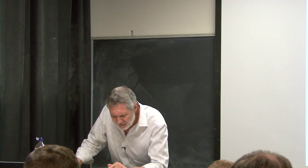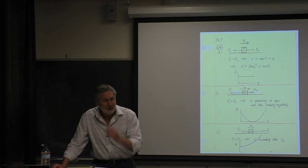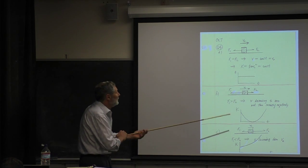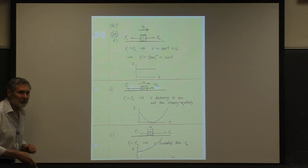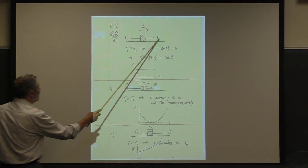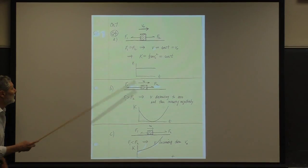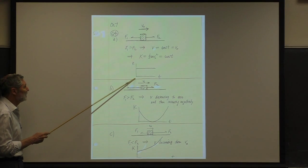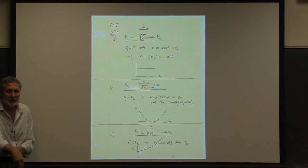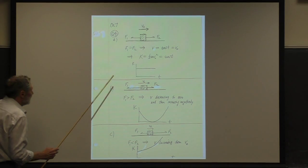There are two forces in each situation on the block — one positive force to the right and one to the left — and the block has some initial velocity. If the forces are balanced, the kinetic energy doesn't change with time. It's one half the mass times the square of the velocity, so it won't change.